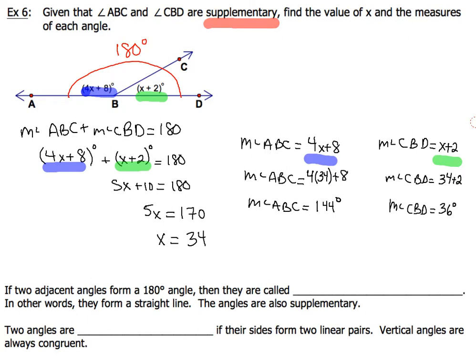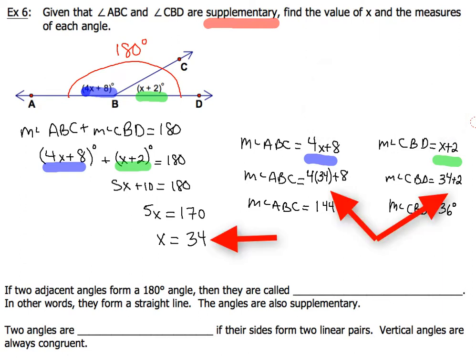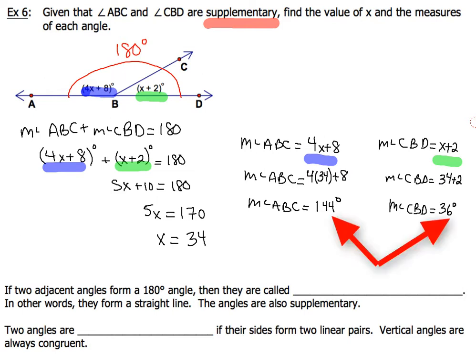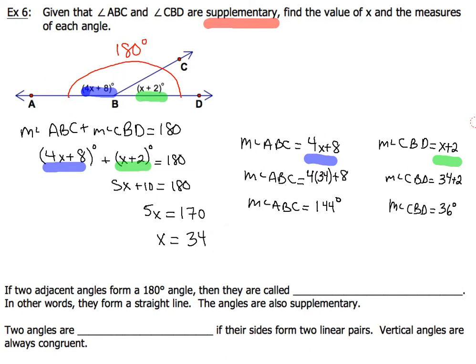Here's what that would look like. We take each equation and set it up to the appropriate expression. We substitute the value of 34 in for x. We do our arithmetic to determine that the measure of angle ABC has a value of 144 degrees, and the measure of angle CBD is 36 degrees. Note that x being 34 does not have a degree symbol, because 34 does not represent an angle.